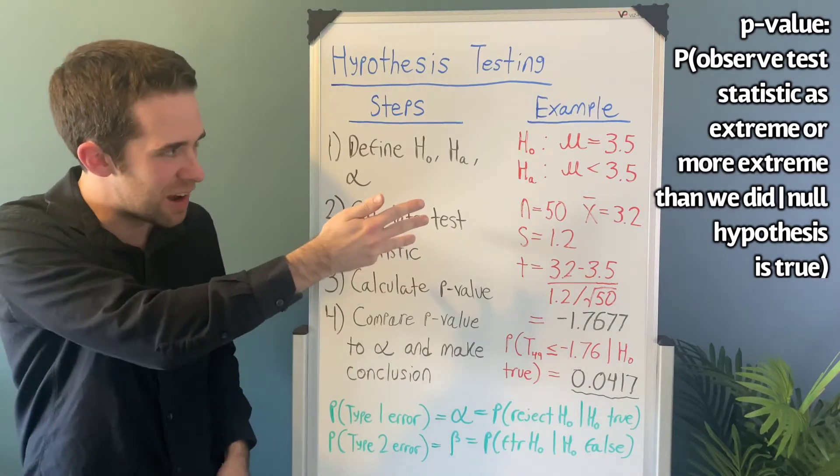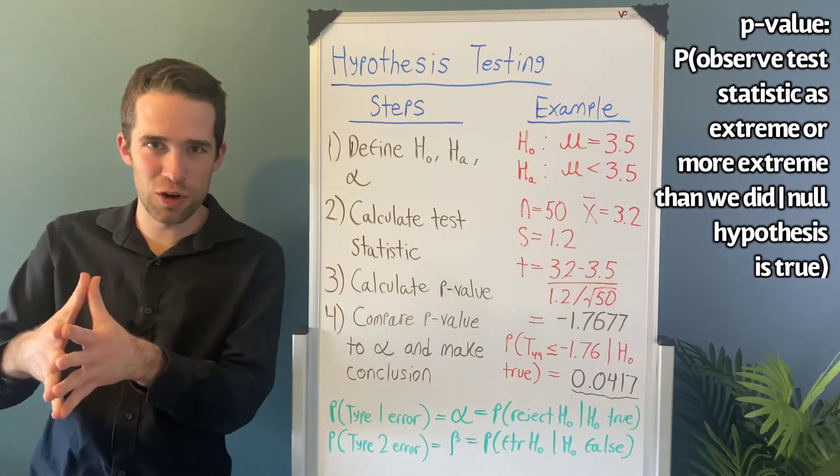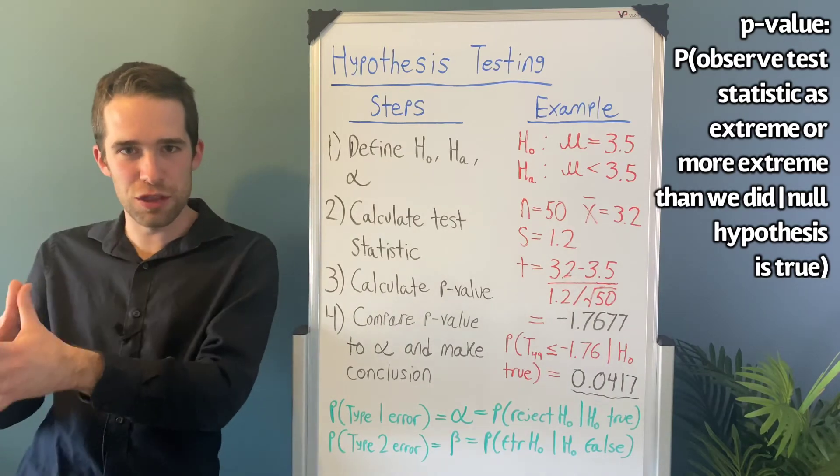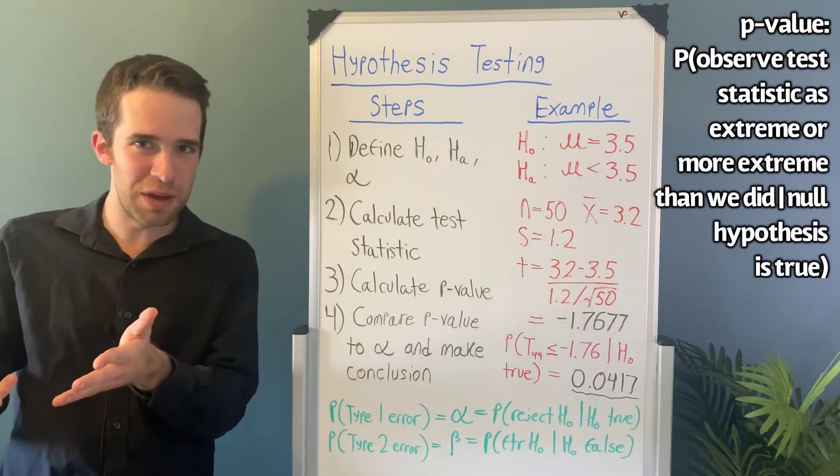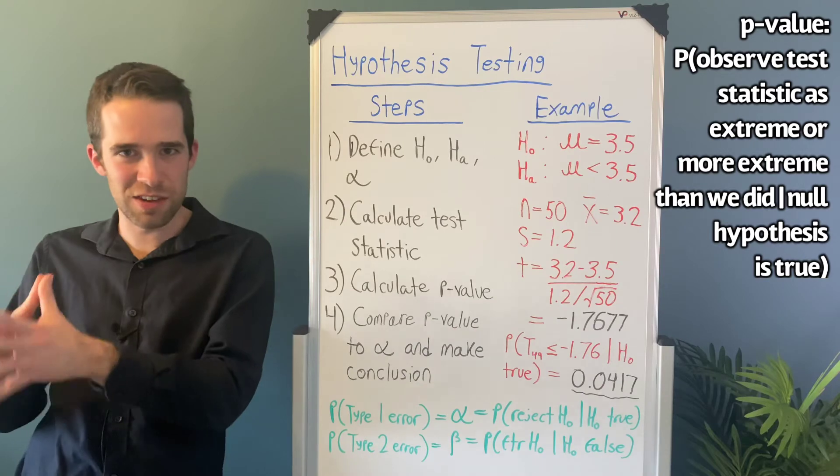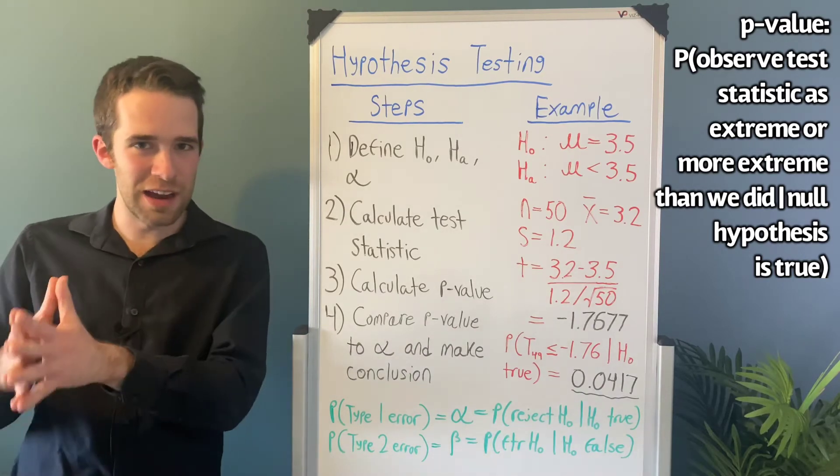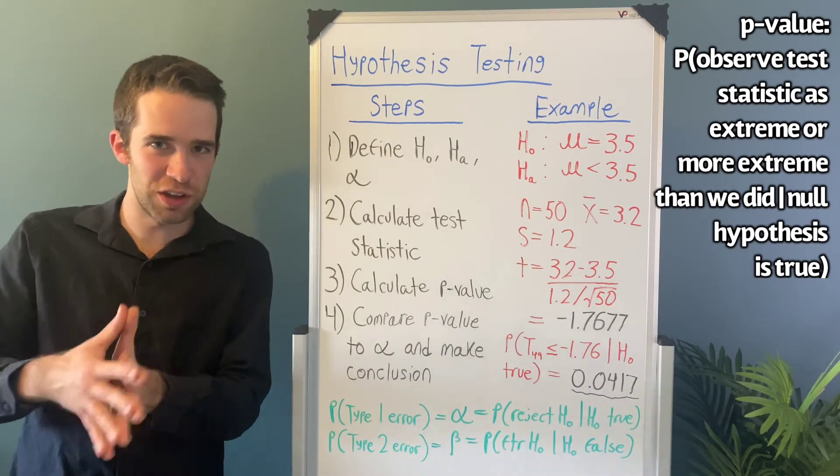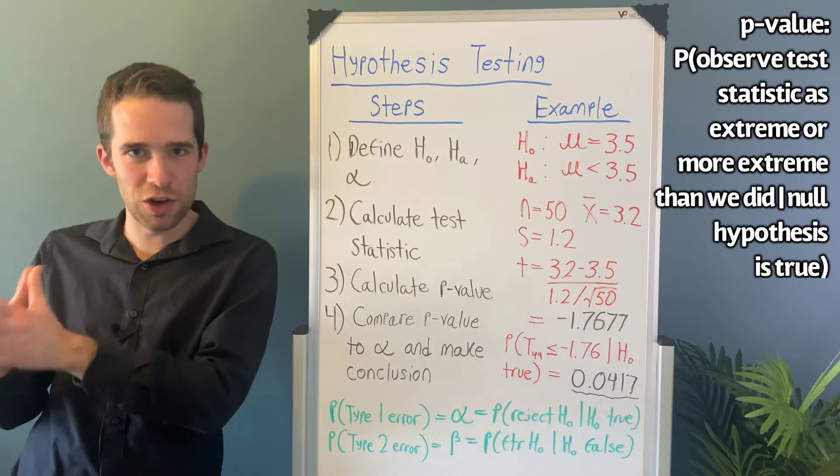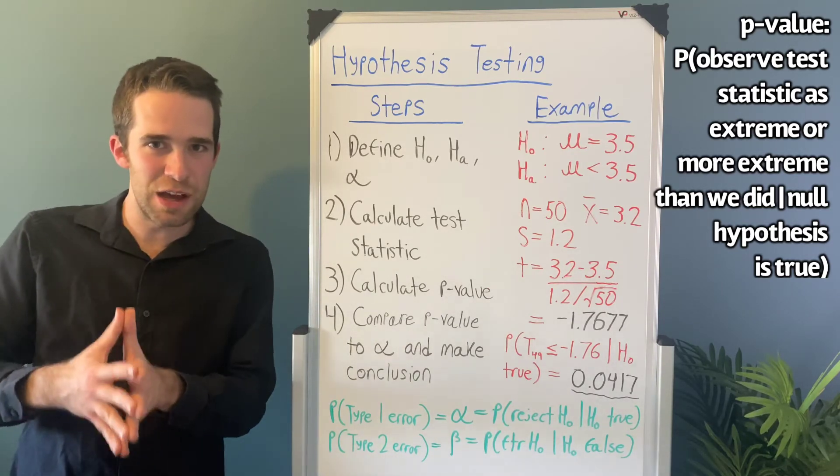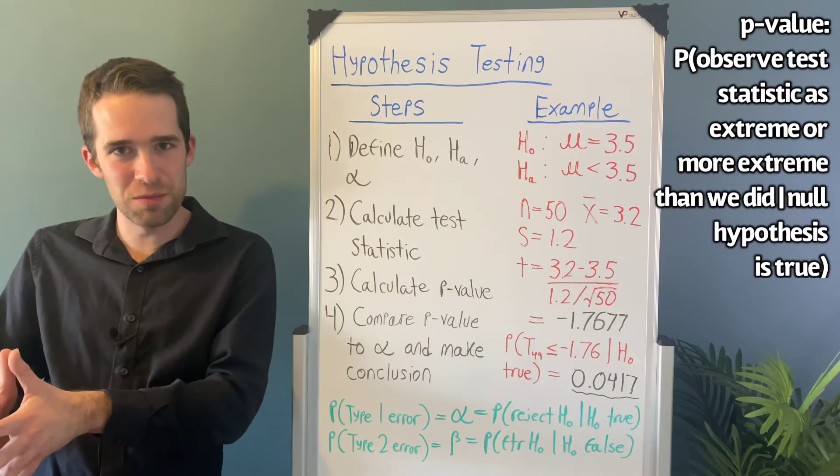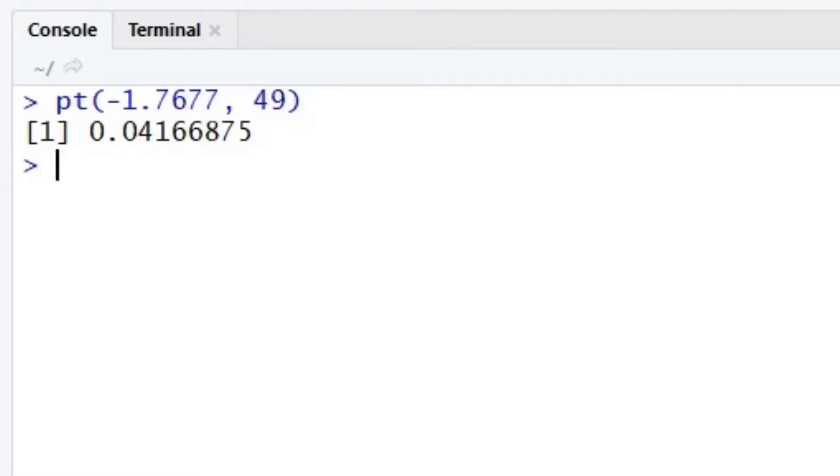We have a left-sided test here - that is, the alternative is that μ is less than 3.5. So the p-value is the area on the left side of the statistic as well. That is, the area to the left using a t distribution with 49 degrees of freedom of t equals negative 1.7677. Now we go into R and we use an appropriate probability function, and we find that the p-value is 0.0417.